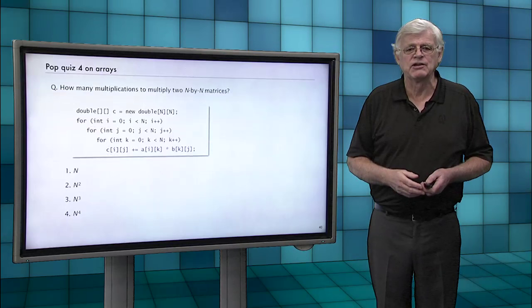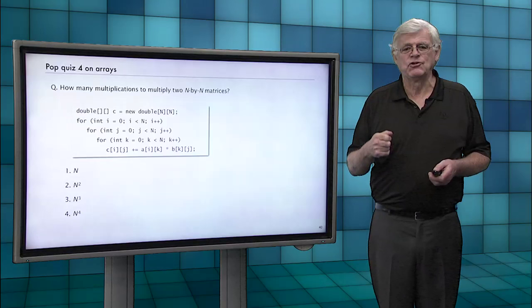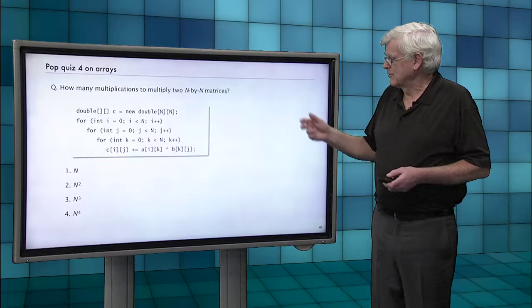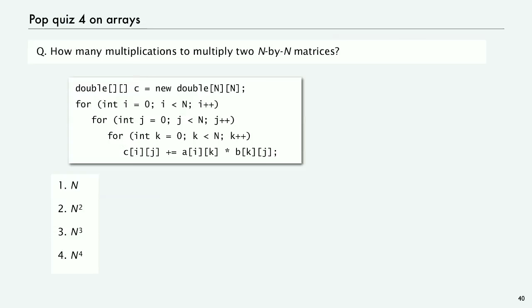Just a quick question. How many multiplications do you need to multiply two n by n matrices? And you look at this code just for a second and you see, well, it's a triple loop. Each one executed n times. So the answer is n times n times n. That's n cubed to multiply two n by n matrices.